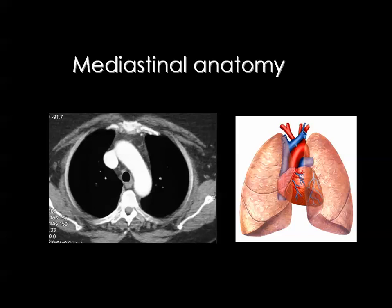Moving to chest anatomy: we have two image types — mediastinal images and lung images. In mediastinal images we identify mediastinal structures; in lung images we identify the lobes and segments of each lobe. To interpret chest CT scans you must identify our anatomic landmark — the arch of the aorta — which chest physicians commonly call 'the banana' for its resemblance to that shape.